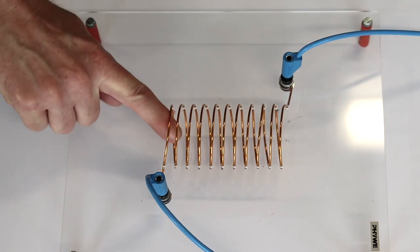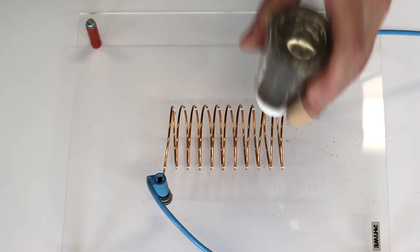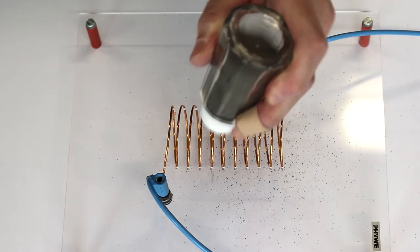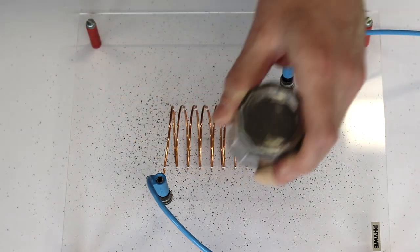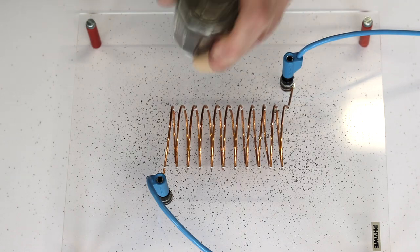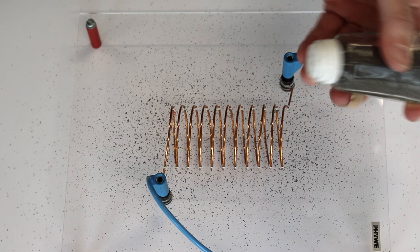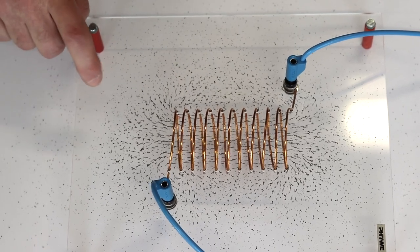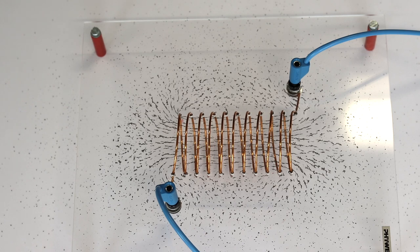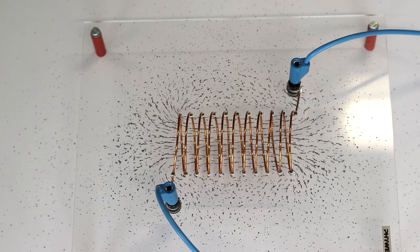Now to visualize the magnetic field inside the coil, I'm going to use one without an iron core. So I'm going to sprinkle some iron around. There's no current flowing through the coil right now. Now let's switch the current on, and I'm going to gently tap the surface. As you can see, the field lines inside the coil are almost parallel.